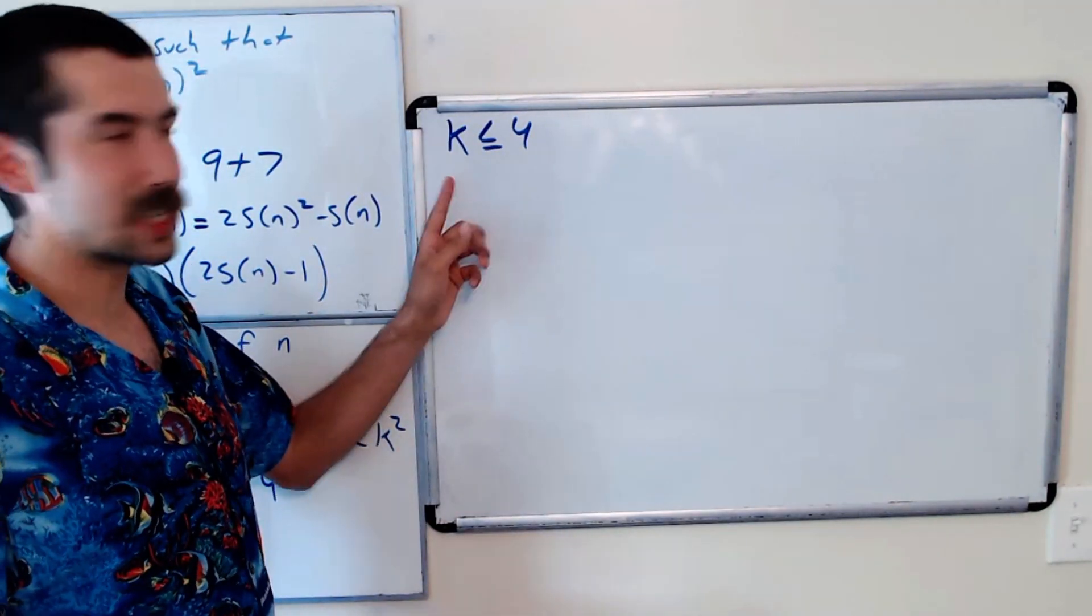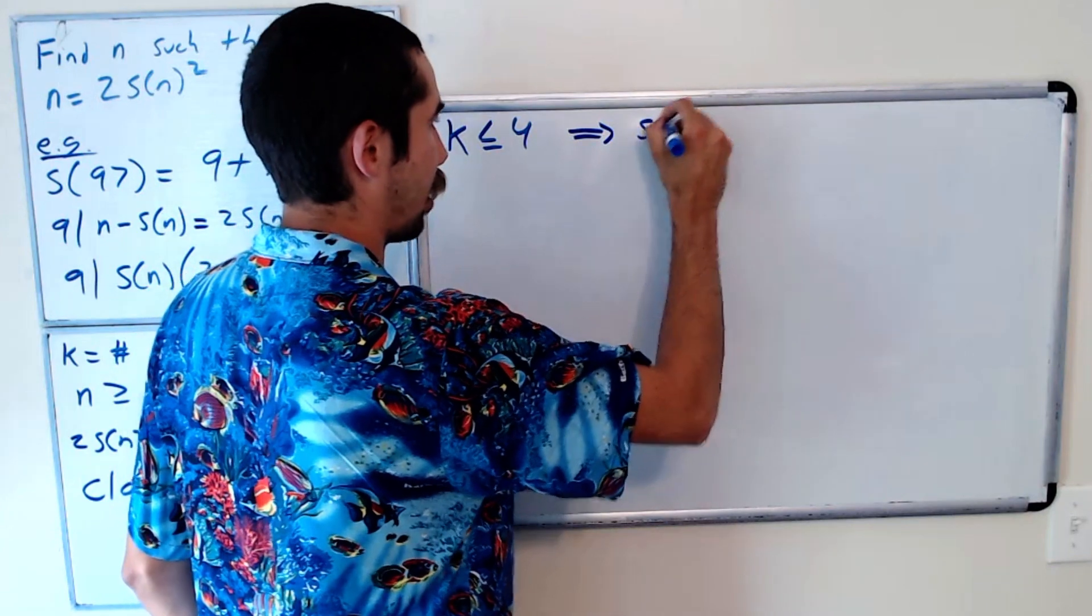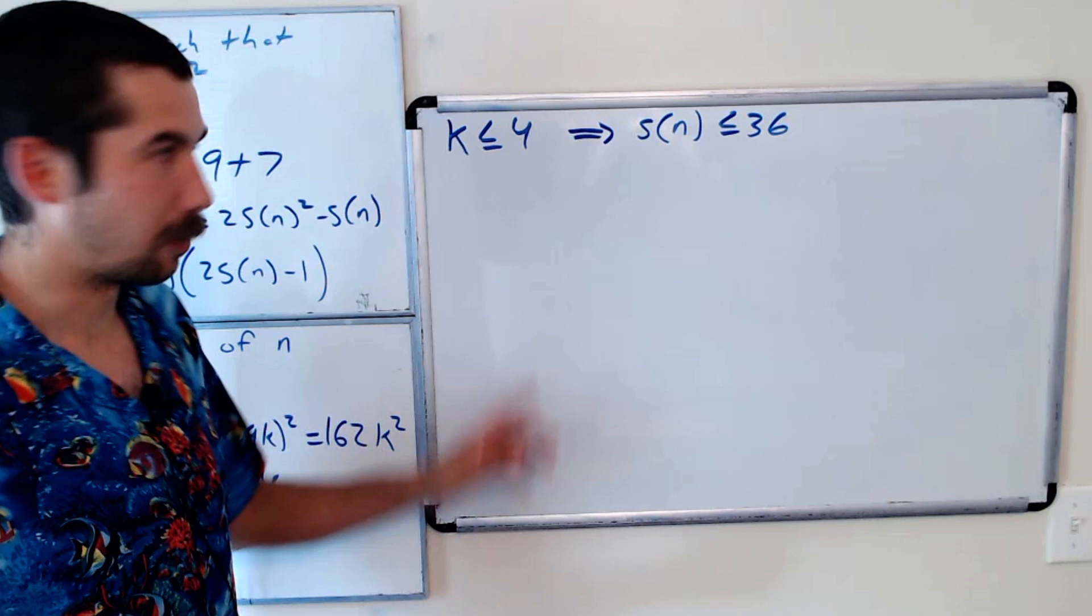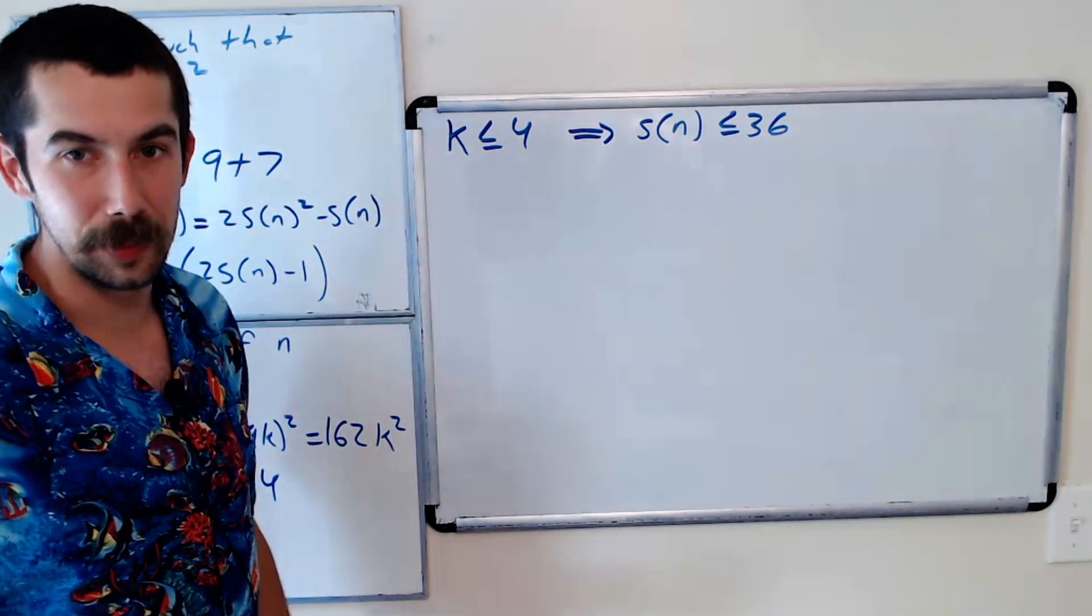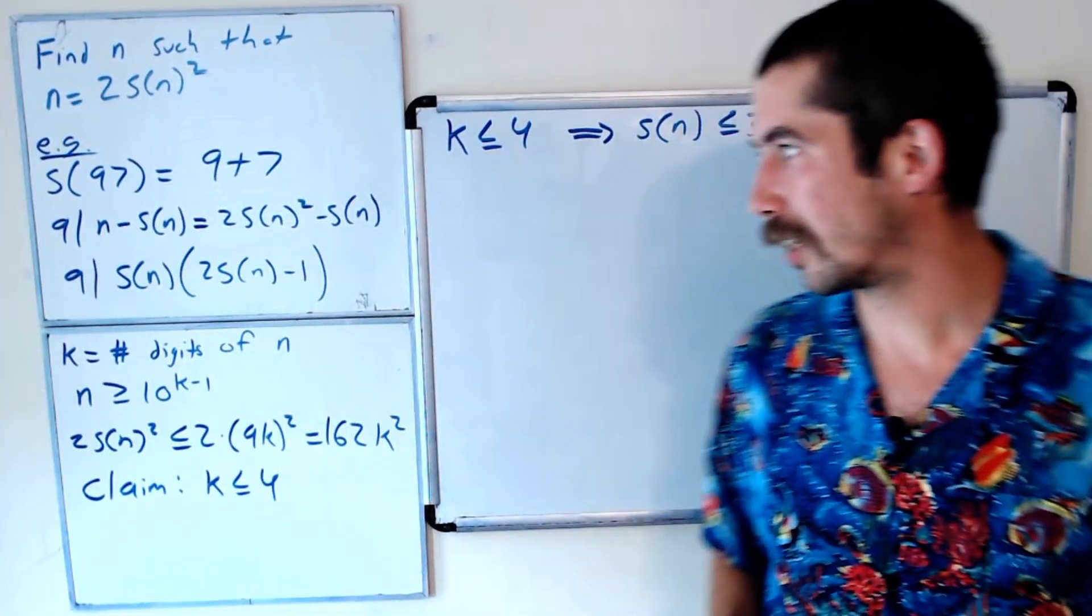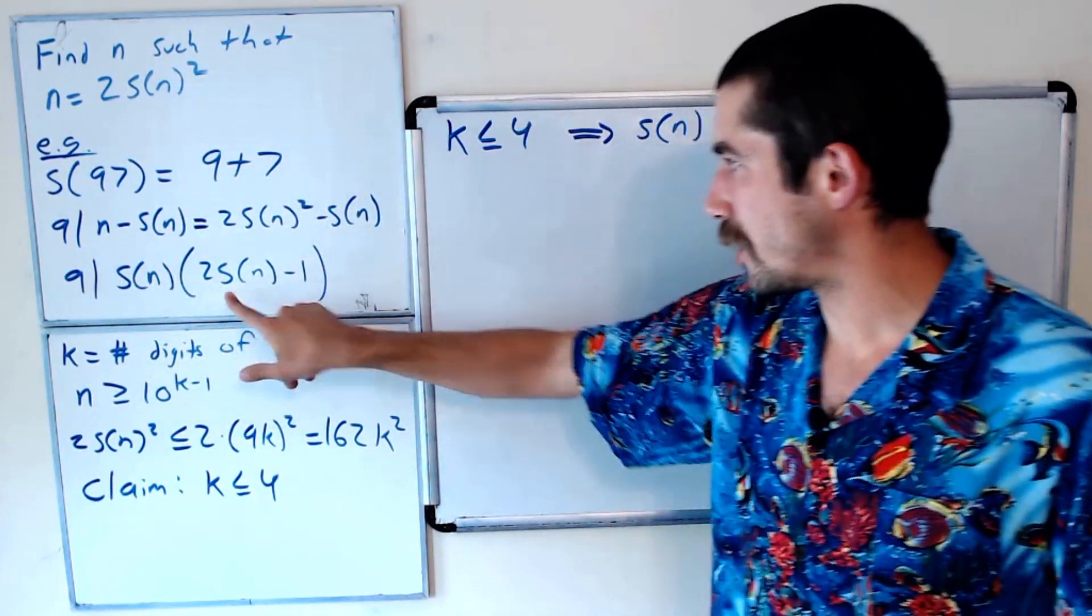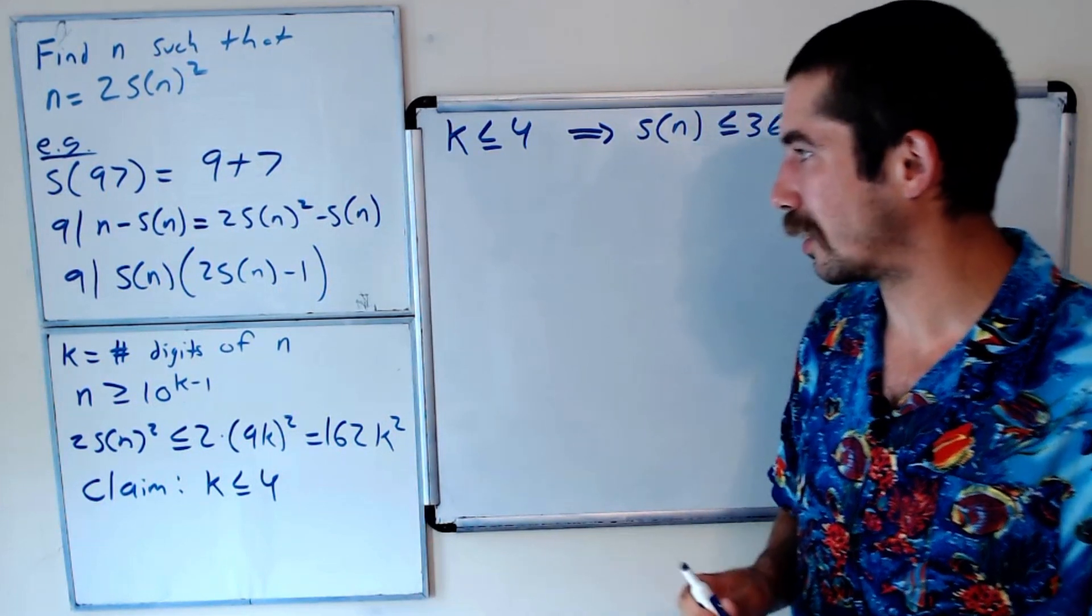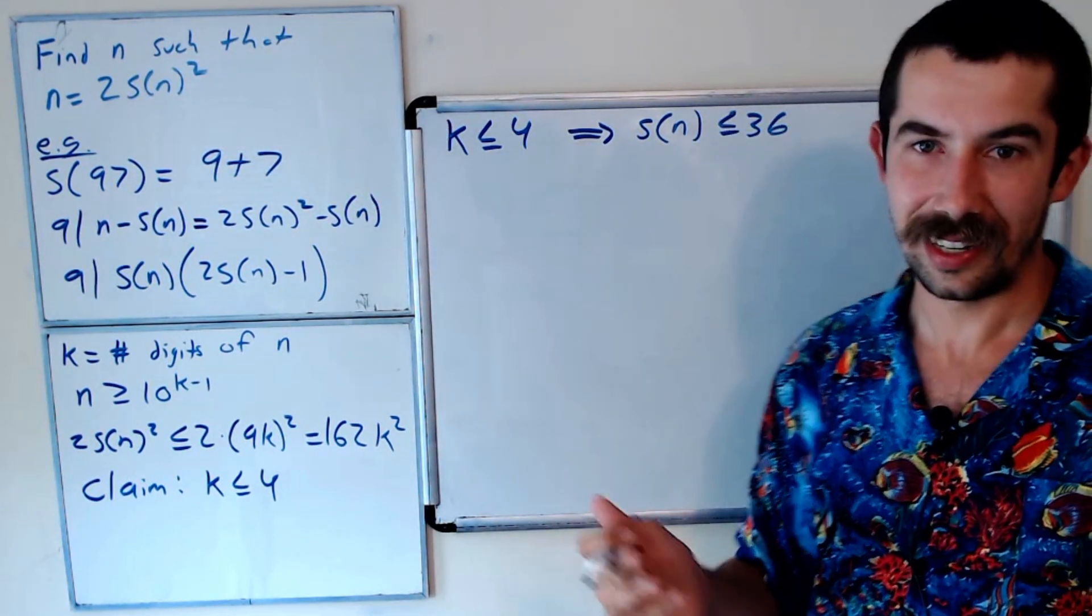So we know that k has to be less than or equal to 4, and that implies that S(n) is less than or equal to 36. If we had a four-digit number of all nines, that's the biggest that S(n) could be. And so let's look at these two cases that I mentioned earlier. Either 9 divides S(n), or 9 divides 2S(n) - 1. There's going to be a number of numbers that satisfy either of those properties, and then we'll check which ones satisfy the property we care about, and then we'll be done.